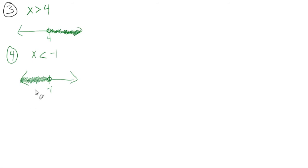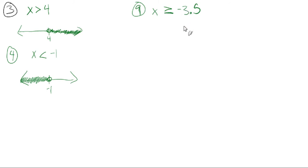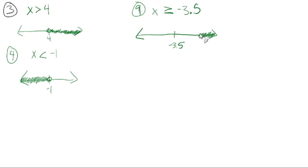Let's look at number nine as an example of the other symbol: greater than or equal to. x needs to be greater than or equal to negative three point five. Visually, we'll draw a graph. Here's negative three point five, and x just needs to be bigger than that — way out here is good. Could it be exactly negative three point five? Yes, it could. So instead of an open circle, we close this circle to say it could be bigger than negative three point five, and exactly negative three point five is also possible.